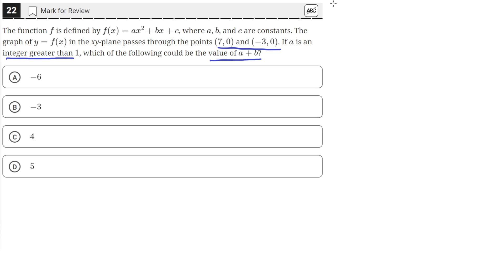Okay, so we're given this equation, f(x) = ax² + bx + c. That's the standard form of a quadratic equation, and we need to find the value of a + b, knowing that this function passes through the points (7, 0) and (-3, 0).